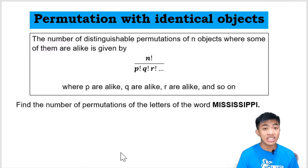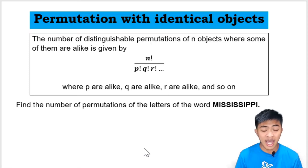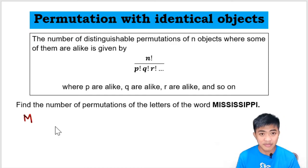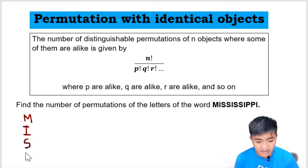Let's go to the next one: permutation with identical objects or distinguishable permutations. The number of distinguishable permutations of n objects where some of them are alike is given by n factorial over p factorial times q factorial times r factorial and so on, where p are alike, q are alike, r are alike, and so on. Itong formula, ginagamit ito kung sa problem ay may mga objects na magkakaparehas. Example, find the number of permutations of the letters of the word MISSISSIPPI. Dito kasi sa word na ito, maraming letters ang magkakapareho. We have to enumerate those letters muna.